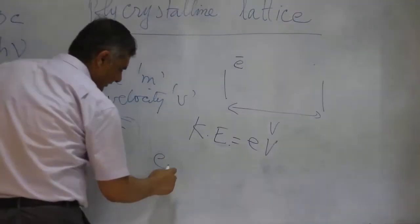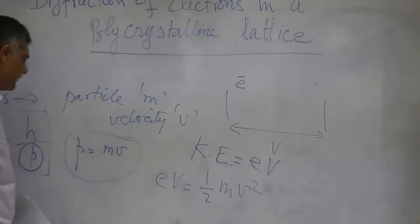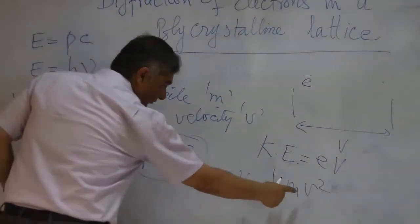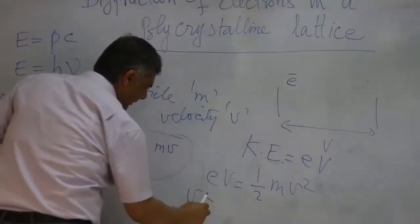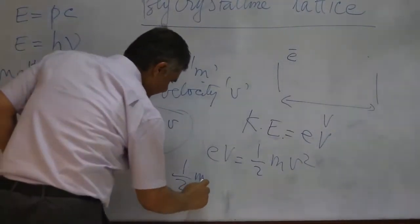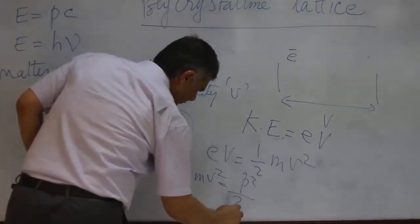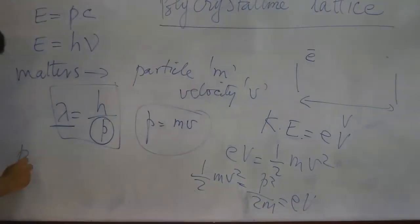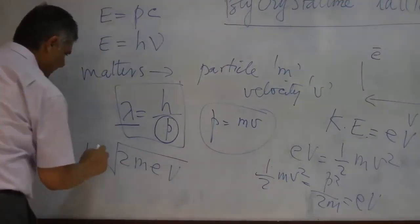The kinetic energy EV is given by 1/2 mv squared. We will find V from here, which can be written as 1/2 mv squared equals P squared over 2m, which equals EV. So P is given by square root of 2mEV.